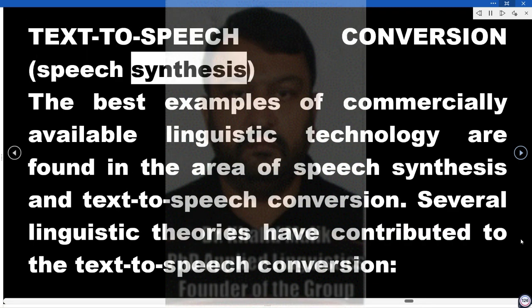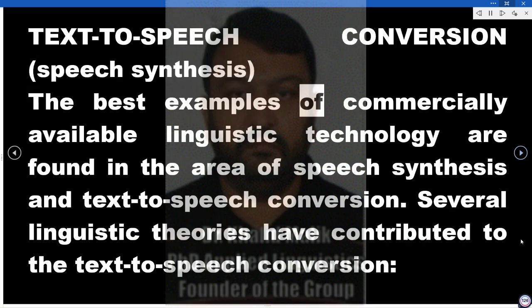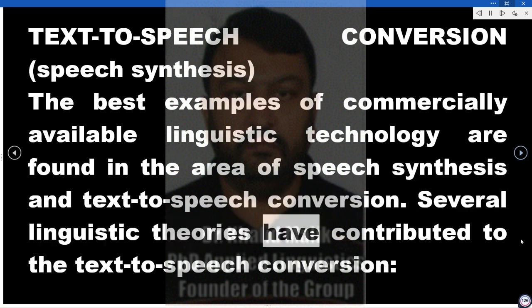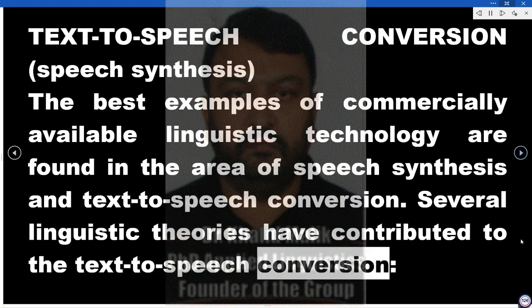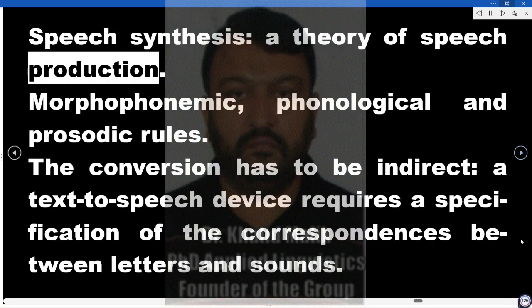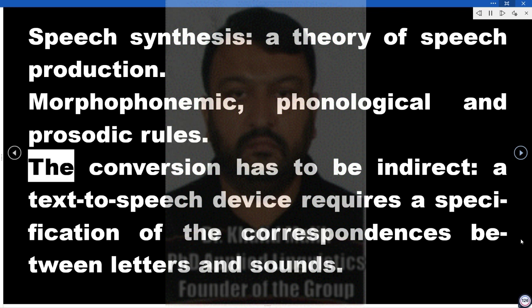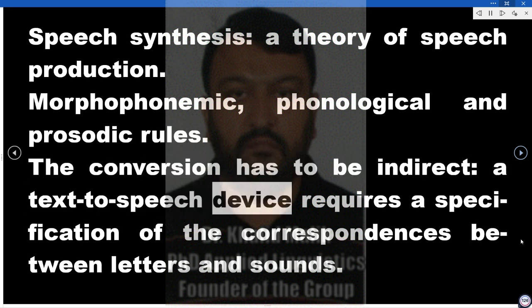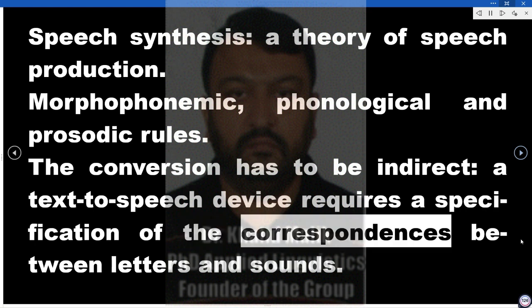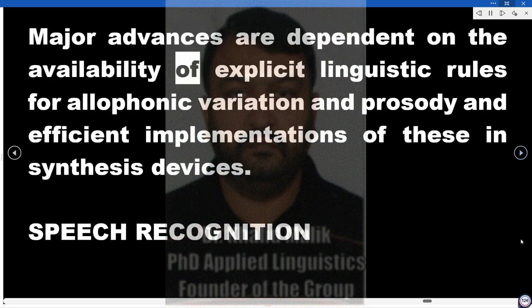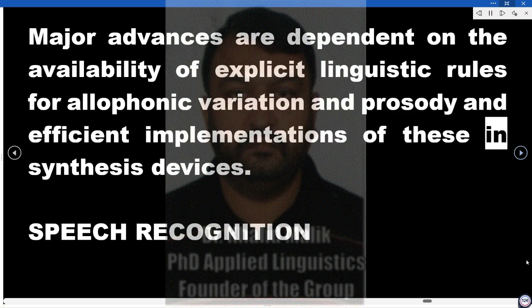Text-to-speech conversion and speech synthesis: the best examples of commercially available linguistic technology are found in the area of speech synthesis and text-to-speech conversion. Several linguistic theories have contributed to text-to-speech conversion, including speech synthesis as a theory of speech production, and morphophonemic, phonological, and prosodic rules. The conversion has to be indirect — a text-to-speech device requires a specification of the correspondences between letters and sounds. Major advances are dependent on the availability of explicit linguistic rules for allophonic variation and prosody, and efficient implementations of these in synthesis devices.